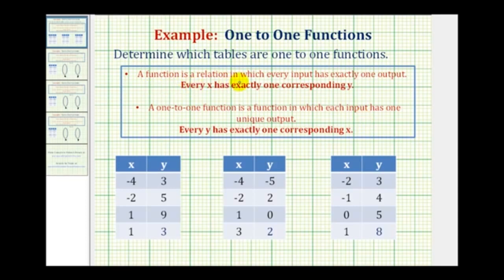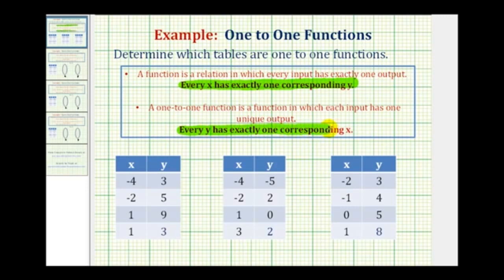A function is a relation in which every input has exactly one output. Remember, the inputs are the x values, or the domain, and the outputs are the y values, or the range. An easier way to think of this is, a relation is a function if every x has exactly one corresponding y value. So once we know a relation is a function, we can then test to see if it's a one-to-one function. A one-to-one function is a function in which each input has one unique output. An easier way to think of this is, a function is one-to-one if every y has exactly one corresponding x.